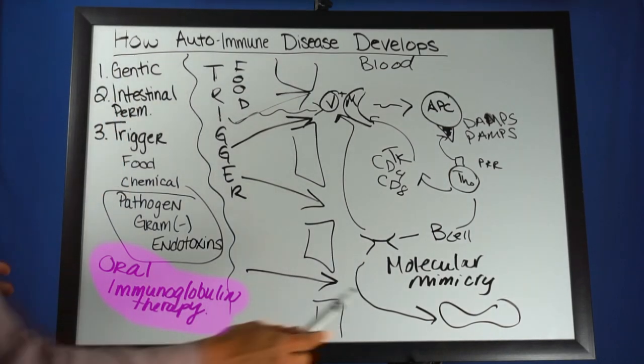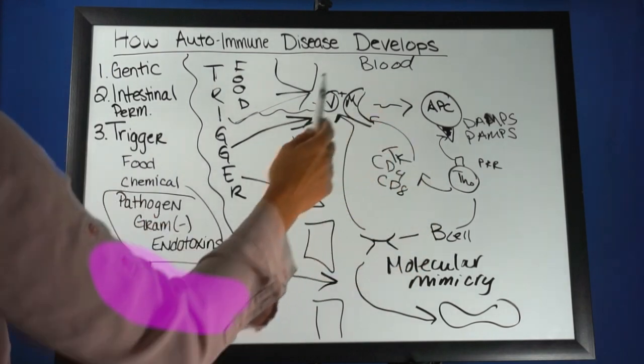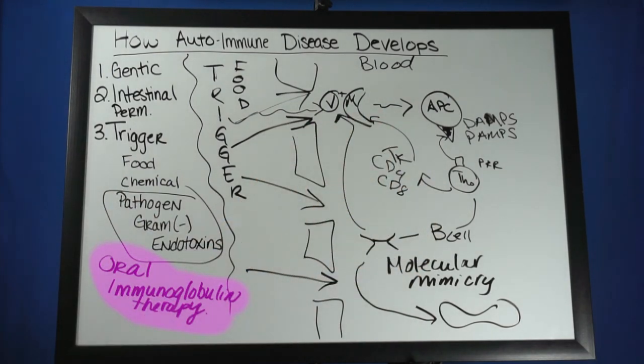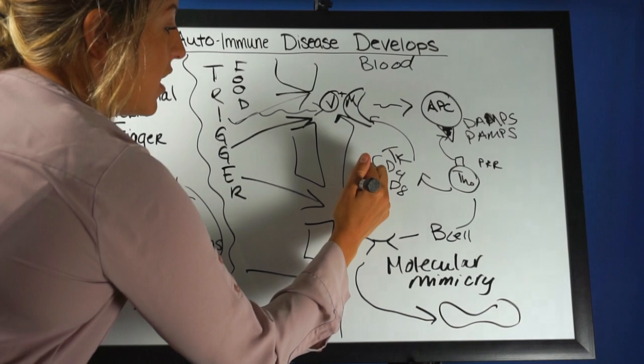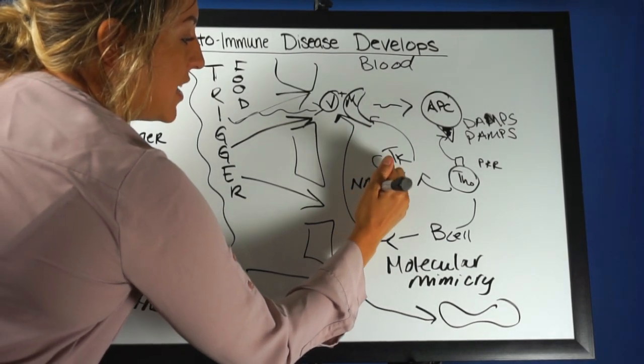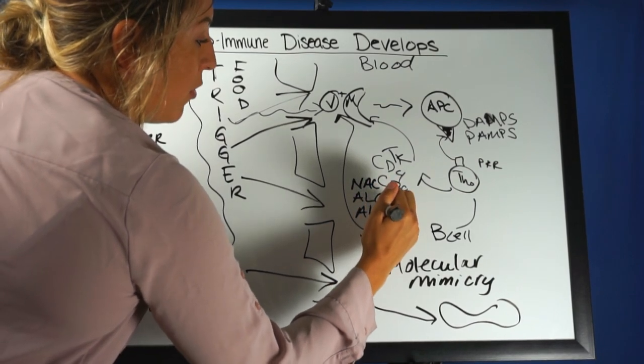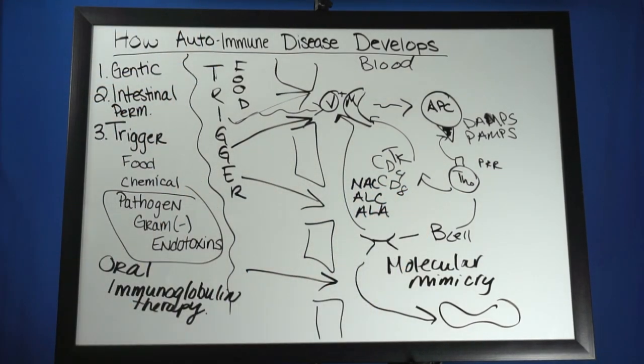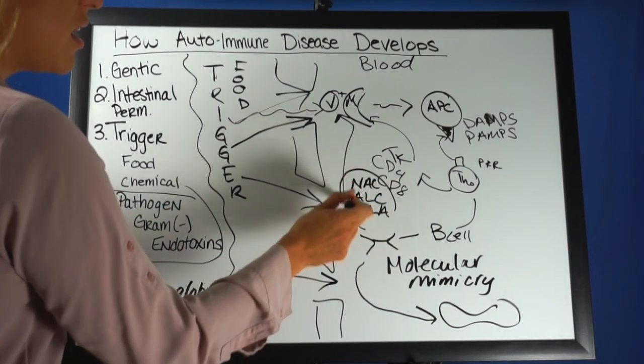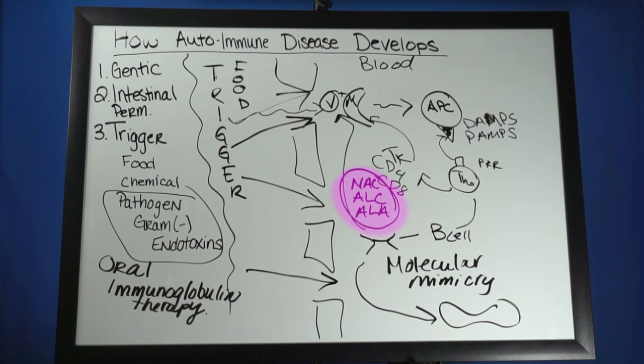When we're looking at how our cells are communicating, there is a great recommendation. Some ingredients you want to look for in a product are N-acetylcysteine, acetyl-L-carnitine, and alpha-lipoic acid. Your healthcare provider can make a great recommendation on a product that incorporates therapeutic levels of all three of these. And again, that's what you want. You want therapeutic levels that's going to help shuttle free fatty acids into the mitochondria of the cells so that your cells are breathing better and communicating better.